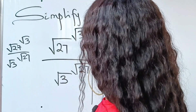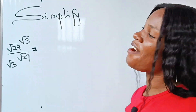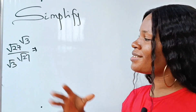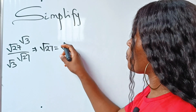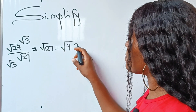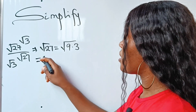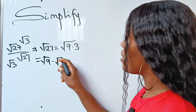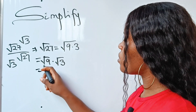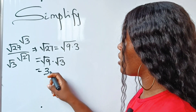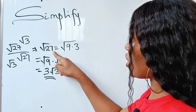Now let us solve this. First of all, root 27 can be expressed as the square root of 9 multiplied by 3. This is the same as square root of 9 multiplied by square root of 3, which equals 3 root 3.